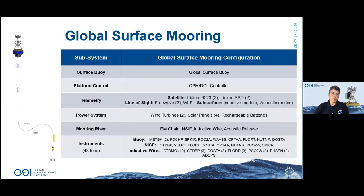The global surface mooring uses the same type of buoy as the coastal surface mooring — a bit taller with more flotation — same type of controller and telemetry, plus inductive communications for instruments clamped on the wire. Same power system as the coastal surface mooring. It has a mooring chain, an instrument frame hanging about 12 meters below the surface, a long inductive wire rope section with instruments clamped directly on, and an inline ADCP frame at 500 meters looking upward. This is not a taut mooring, using an inverse catenary of synthetic portions to the anchor. No instrumentation below 1,500 meters.